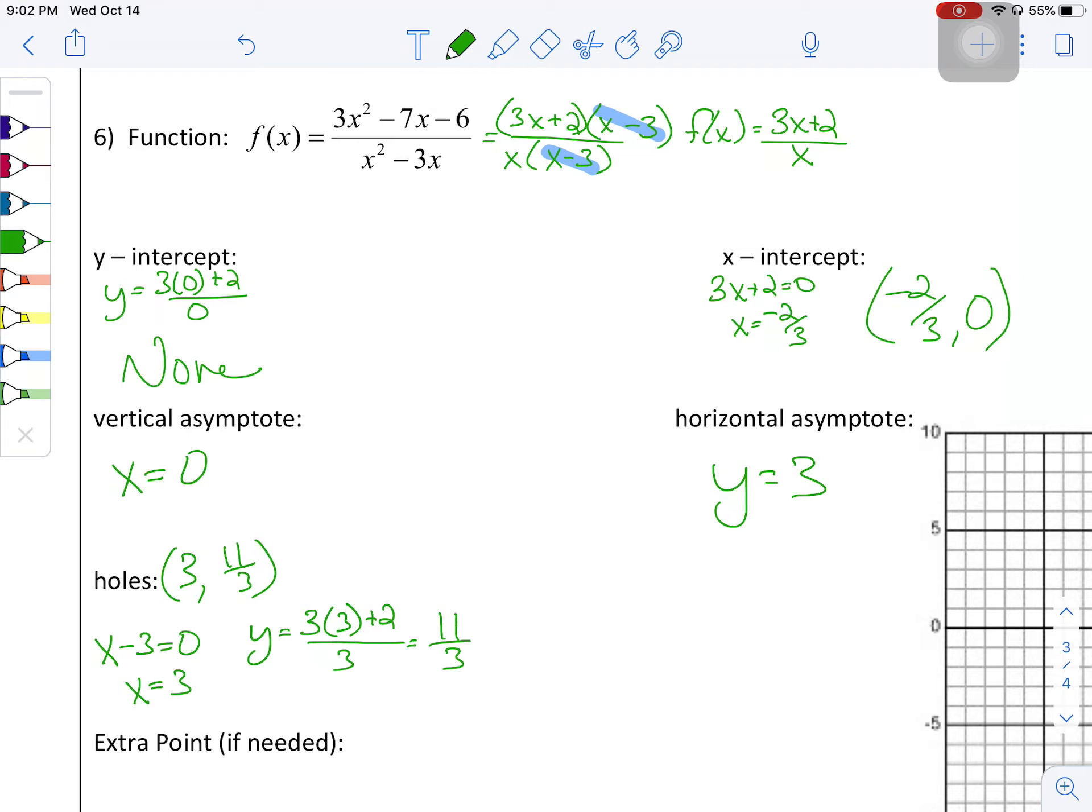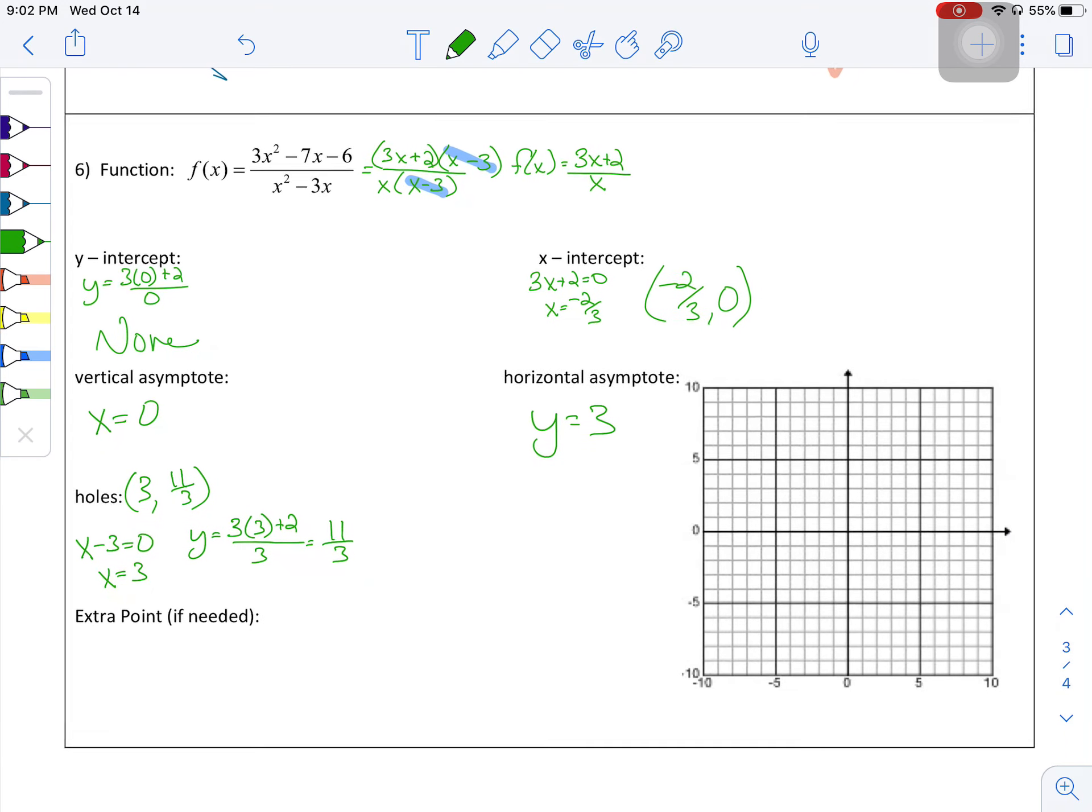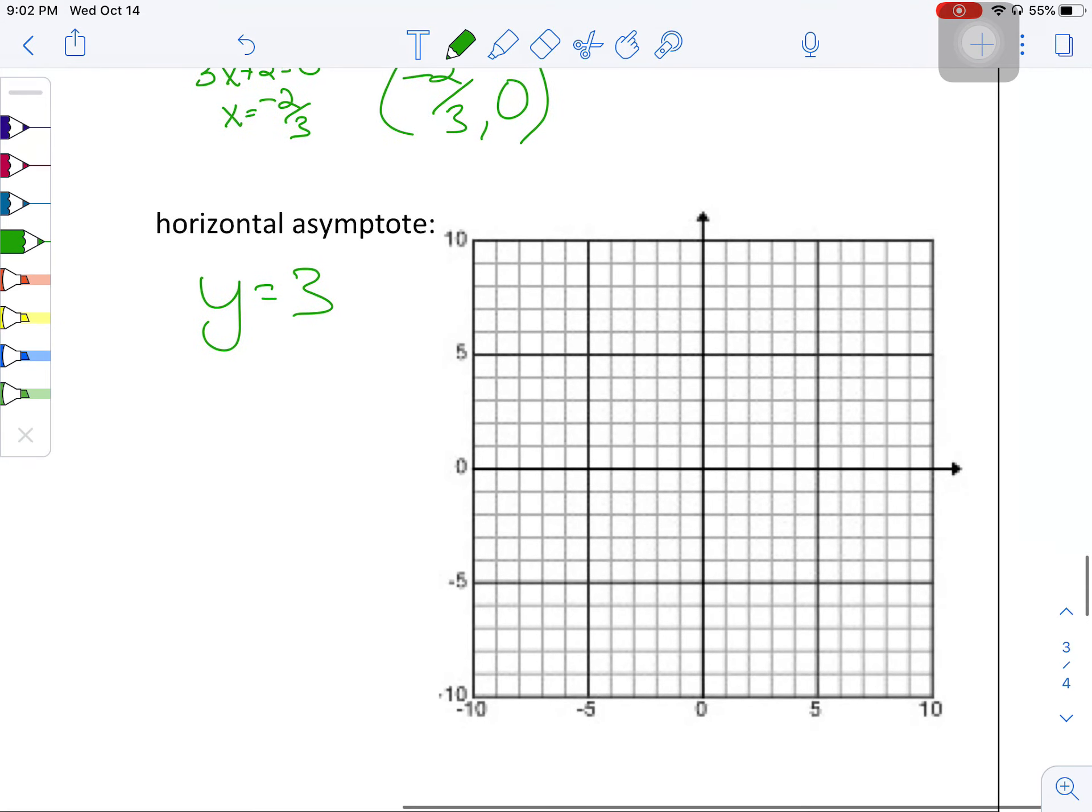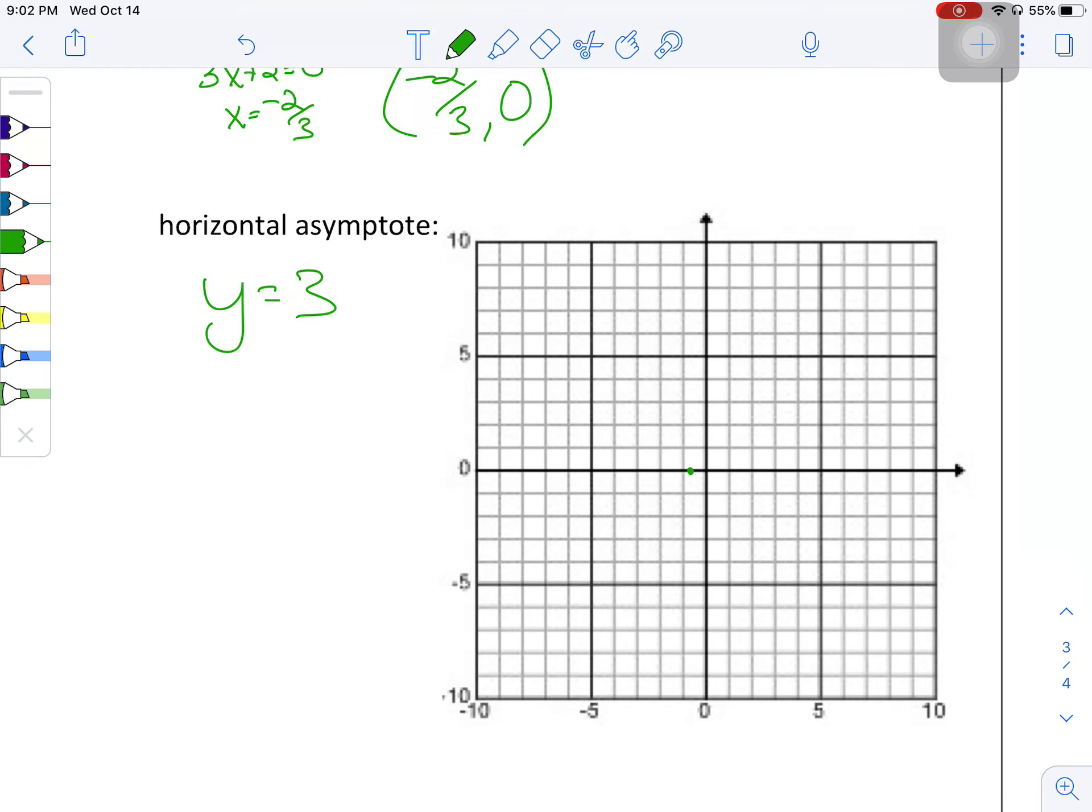All right. So I'm going to take all this information, put it on the graph, see if I need an extra point. If I do, awesome, I'll figure that one out too. All right, no y-intercepts, I don't have to worry about that. Negative two-thirds zero. I'm going to zoom in just a little bit on this so I can get it close.